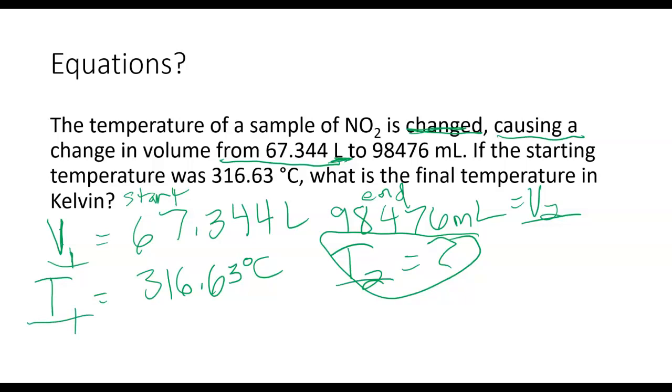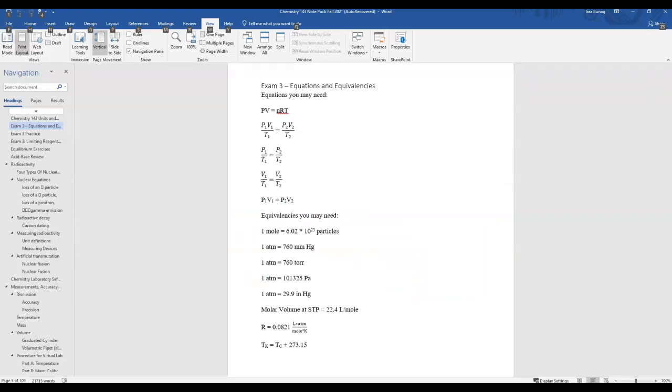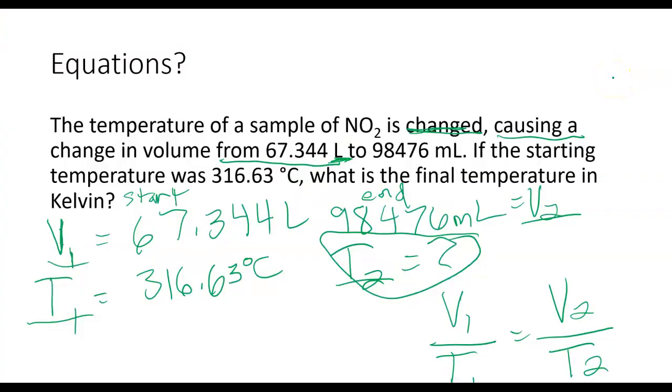So I look at my gas law equations. I'm taking a look at the equations and equivalencies from your note packet. And I can look at my equations here, and I want to look for one that has a V1, a V2, a T1, and a T2. So I have an equation right here: V1 over T1 equals V2 over T2. I finished my second step here.